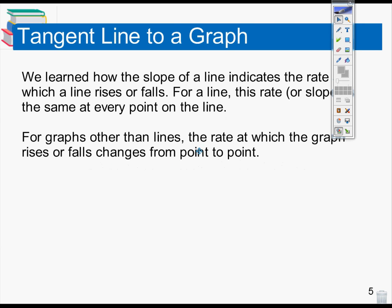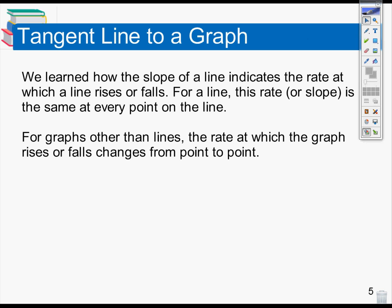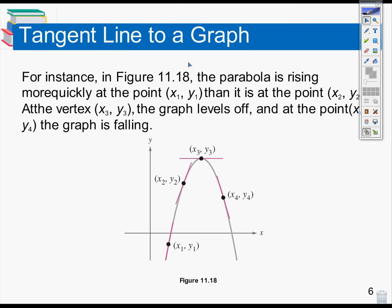Alrighty. So we learned before how the slope is going to indicate the rate of change, or the rate at which something is increasing or decreasing. And for a linear function, it's easy — it's a straight line with a constant slope, and we can figure out what that slope is. For something that's not linear, something that is to a higher degree, that slope is constantly changing.